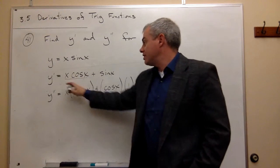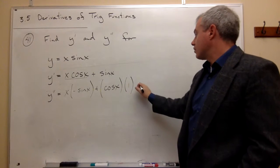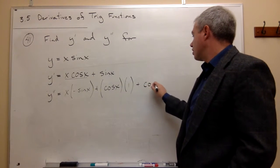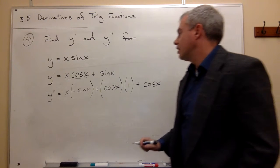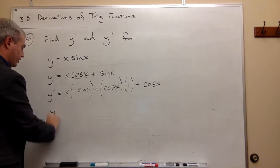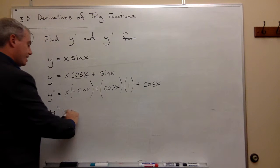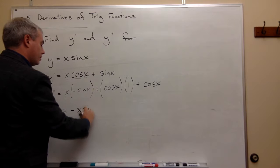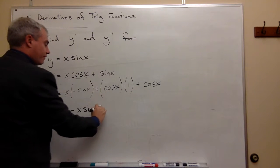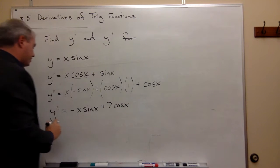That part is done, but I still need to add the derivative of sine x, which is cosine of x. Cleaning this up, y double prime is negative x sine x, and then I've got cosine of x plus cosine of x, which is two cosine x.